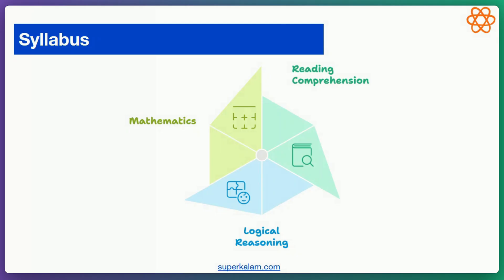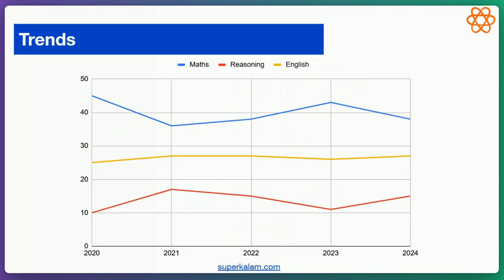Now let's see what have been the trends — how many questions have been asked from each of these three buckets. If we take the average, around half of the questions have been asked from maths. Around 10 to 20 questions have been asked from reasoning, and around 22 to 28 questions have been asked from English.